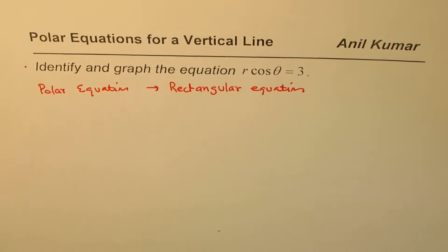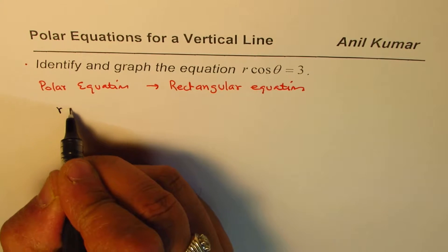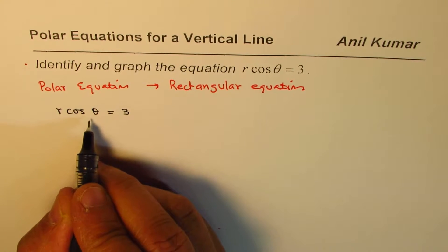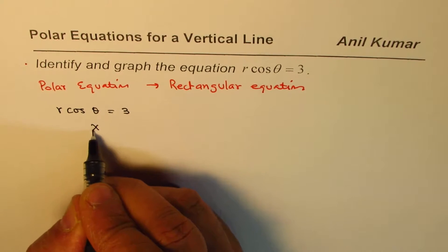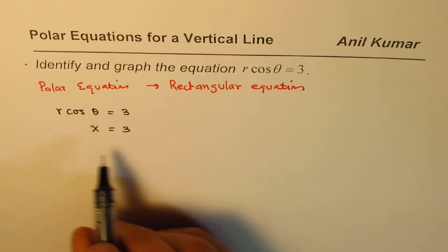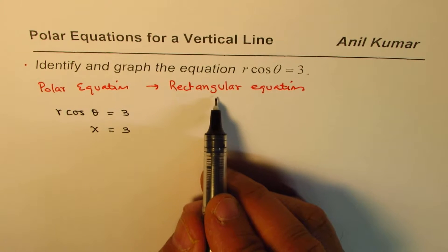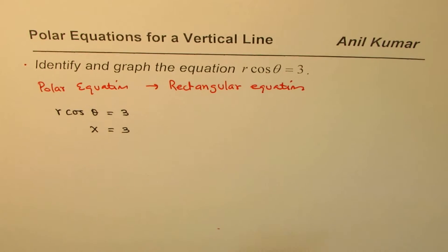So the equation given to us is r cos θ equals 3. Now what is r cos θ? r cos θ is x. So x equals 3 is what the equation should represent on the Cartesian plane rectangular equation.